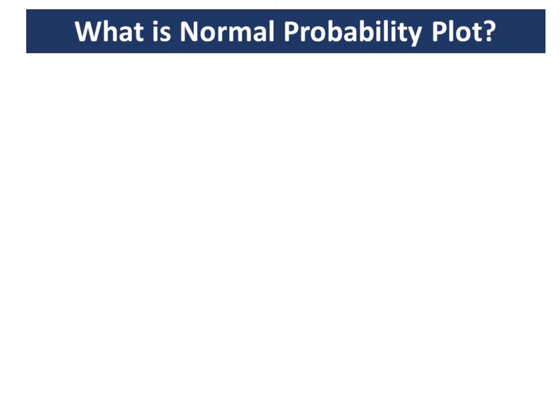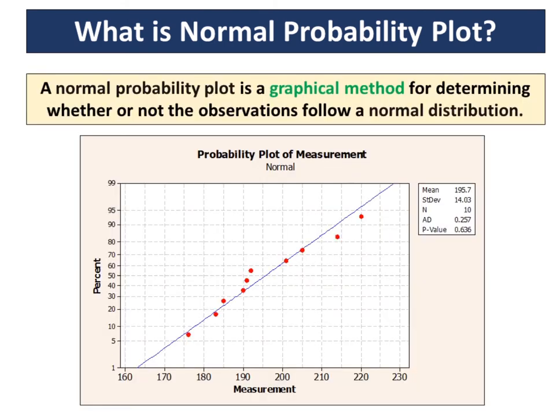What is normal probability plot? A normal probability plot is a graphical method for determining whether or not the observations follow a normal distribution.